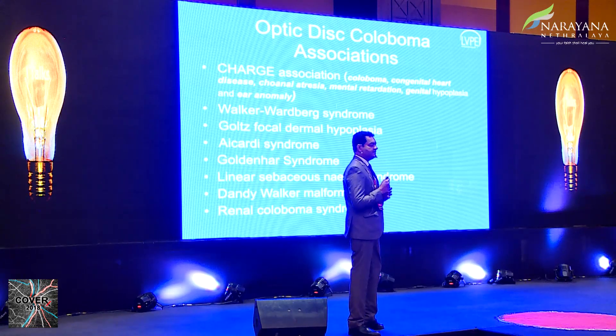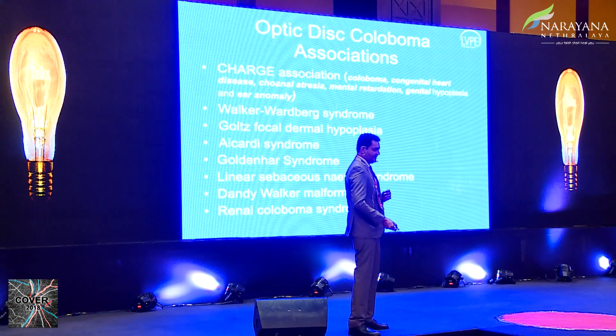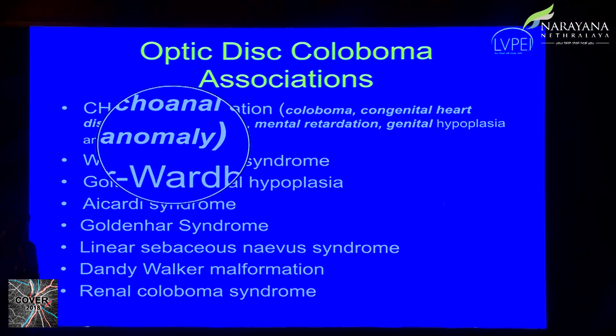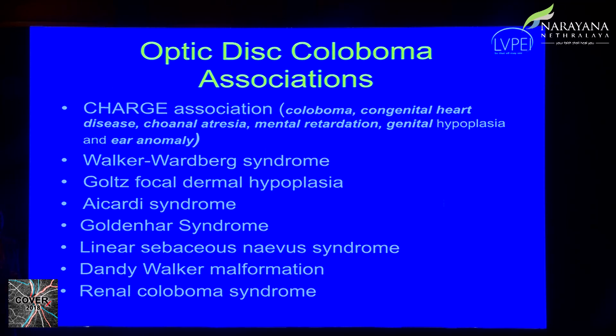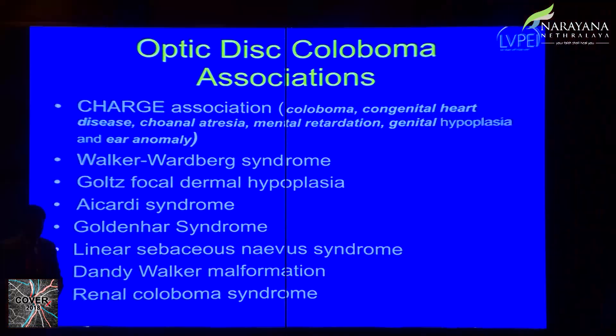Optic disc coloboma has significant syndromic associations. Whenever you see such a patient, examine their face, ears, mouth, and nose — this gives you important clues. For example, in Goldenhar syndrome, you would expect a preauricular tag, Duane syndrome, and esotropia. You need to put these findings together to identify the syndromic association, and if you see something abnormal, refer back to check the relevant syndromes.